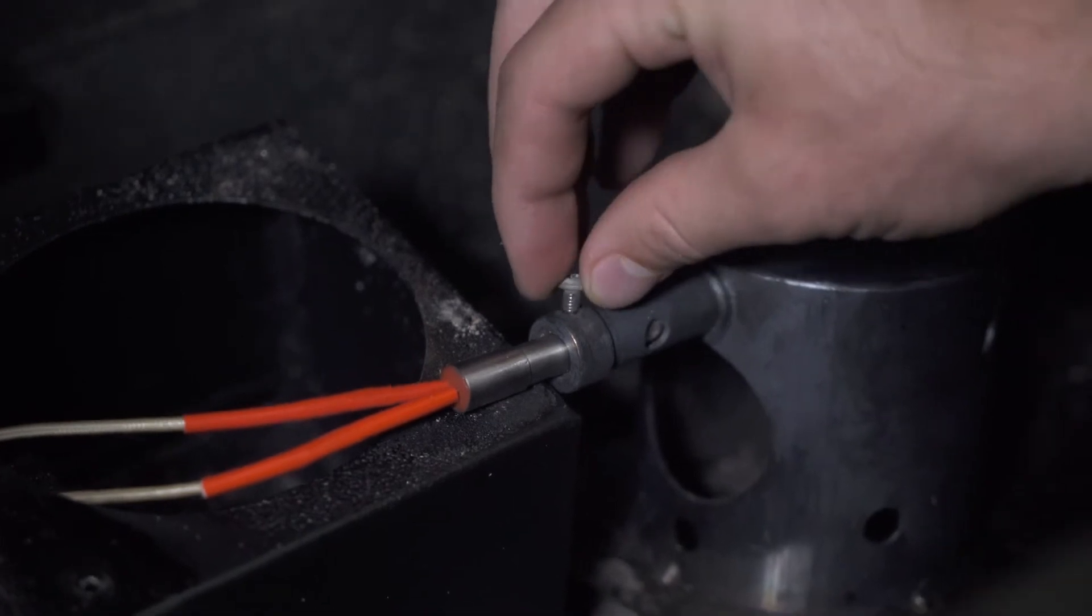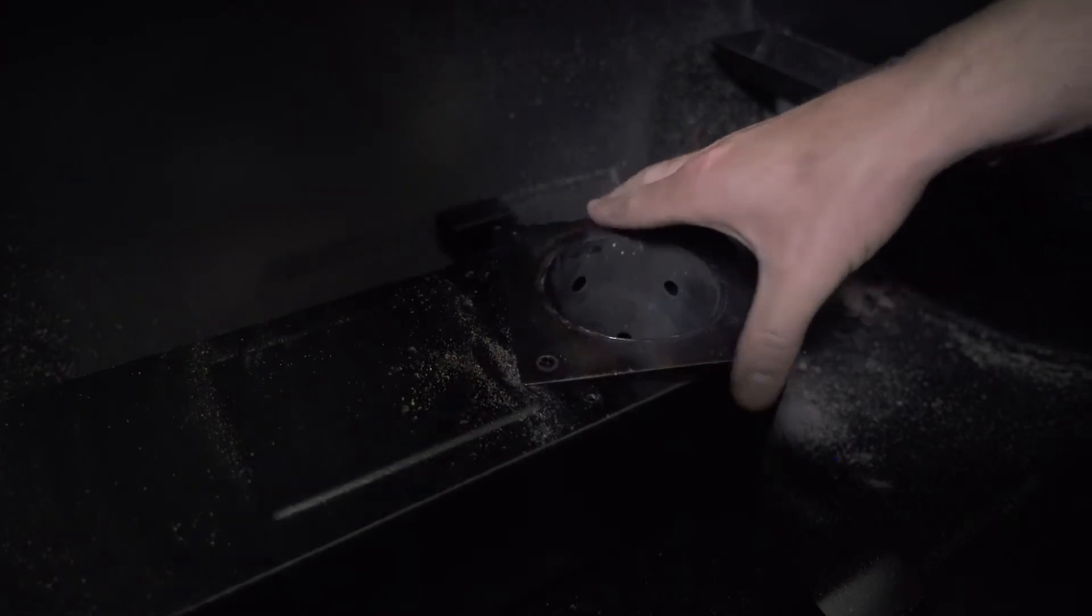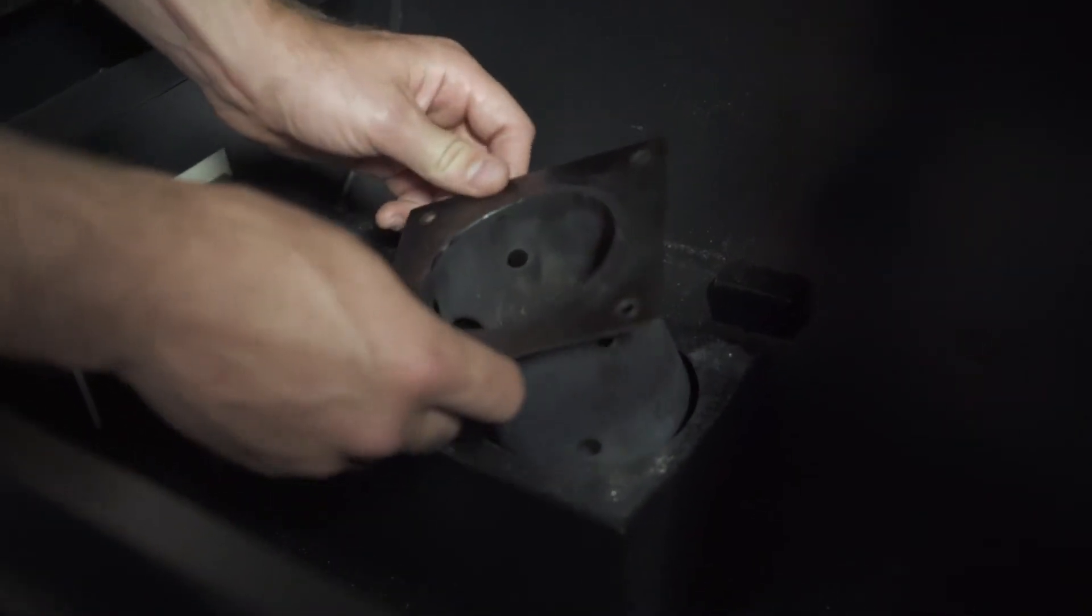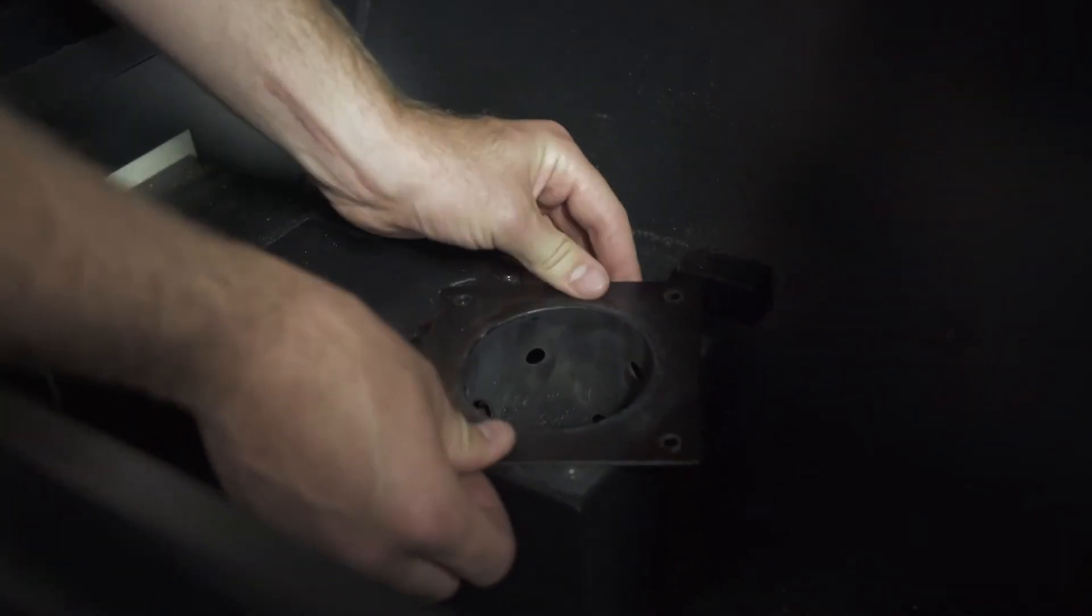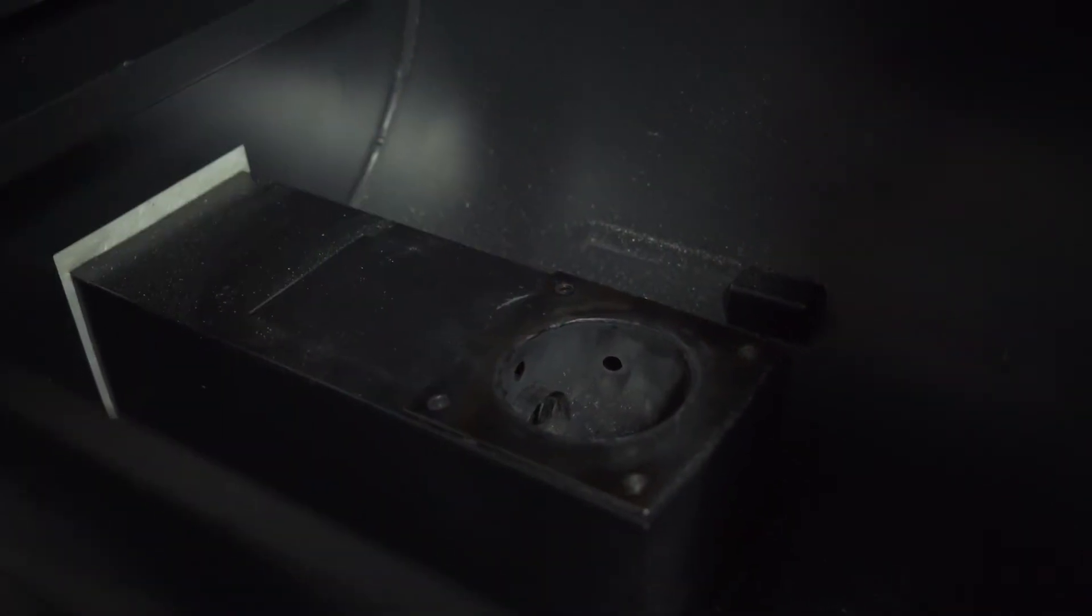Then set the set screw and reassemble your fire pot. To put the fire pot back into its original position, drop it into the grill. Again, you're going to want to make that star shape. This will allow the hot rod to get into the auger tube. Twist it back into its position, lock down the screws, and you should be good to go.